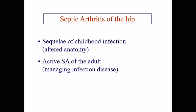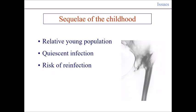We can divide two main situations: the sequelae of the childhood infection, which deals more with the altered anatomy, and on the other side, the active septic arthritis of the adult, where we have to manage the infectious disease. We have two different scenarios. Let's start with the first one, the sequelae of childhood.